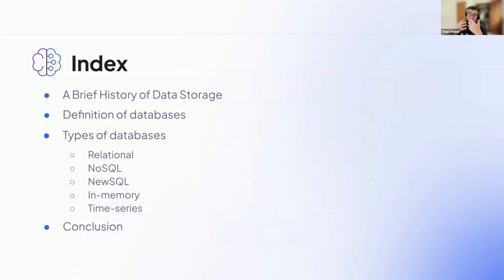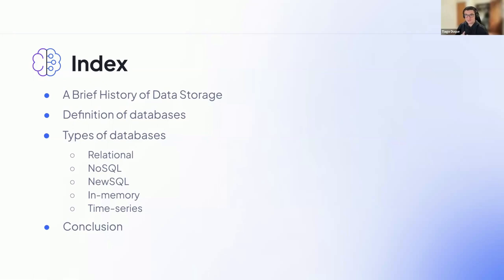The idea here is the topics that we're going to cover. In databases, indexes are used to quickly find data — so that's why there's a pun. We're going to cover some history and introduction, a quick definition of databases, types of databases, and then jump to a conclusion. After that, we have a game where we'll see how much attention you paid, your knowledge, and how fast you are at answering quizzes.